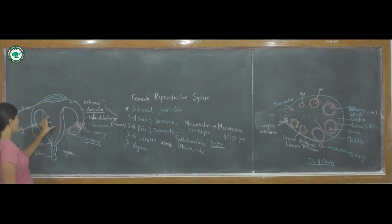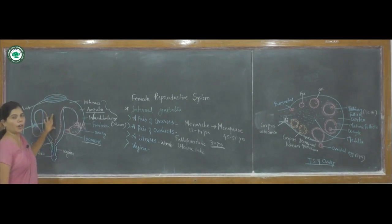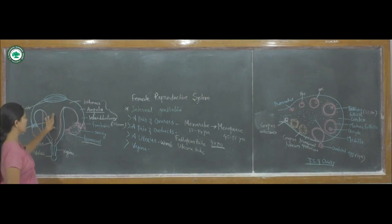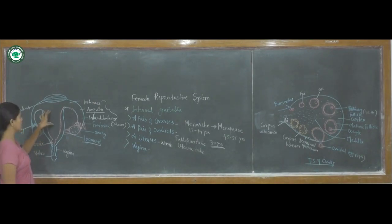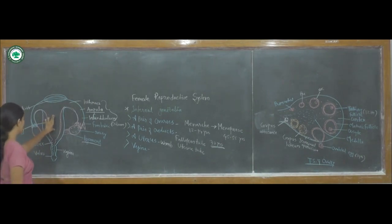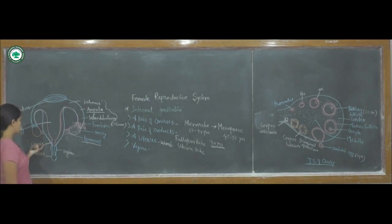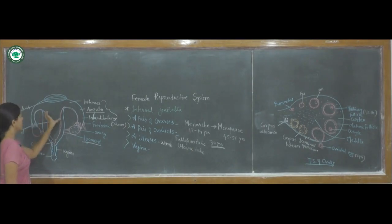The function of the body is that after implantation, the development of the baby is carried out in the uterus. The uterus is also the passage for menstruation. The cervix is a small tube-like structure that connects the uterus with the vagina.